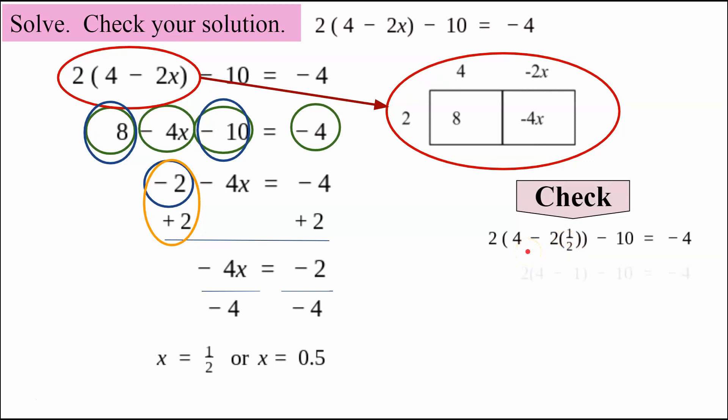So now I'm going to do the math by order of operations. Inside the parentheses first, 2 times 1 half is 1. Still working in the parentheses, 4 minus 1 is 3.